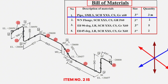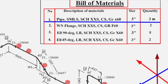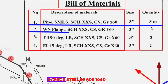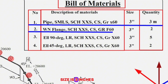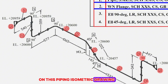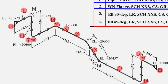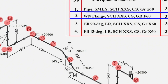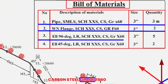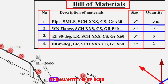Item number 2 is shown in two places on this pipe drawing. Item number 2 is an elbow, 90 degree, long radius, schedule XXS, carbon steel, grade 1060, size 3 inches, quantity 5 pieces.